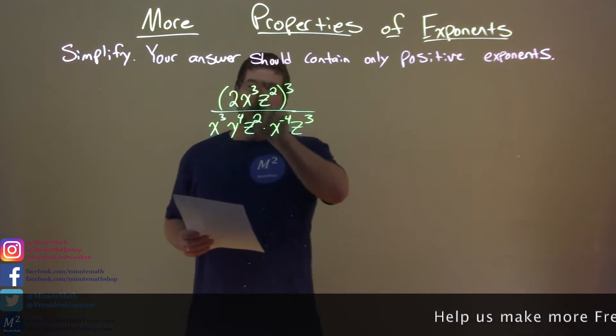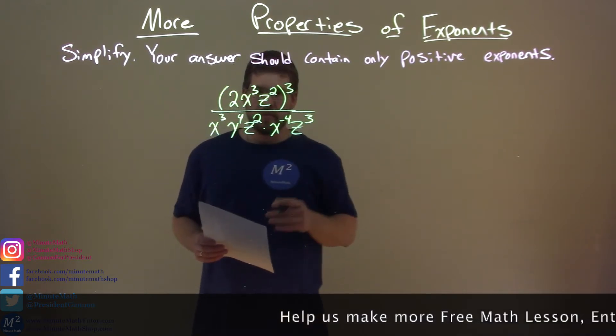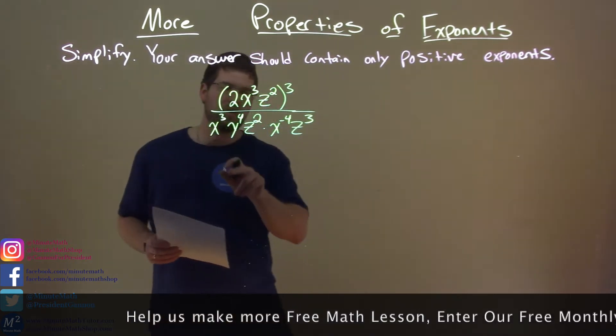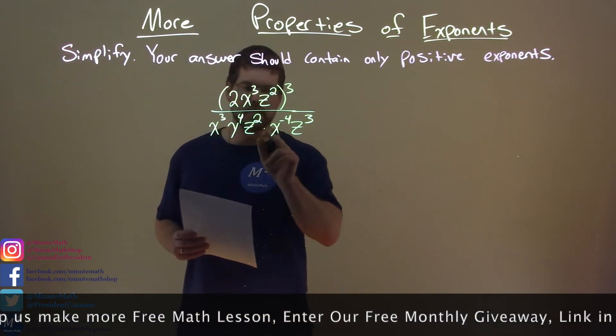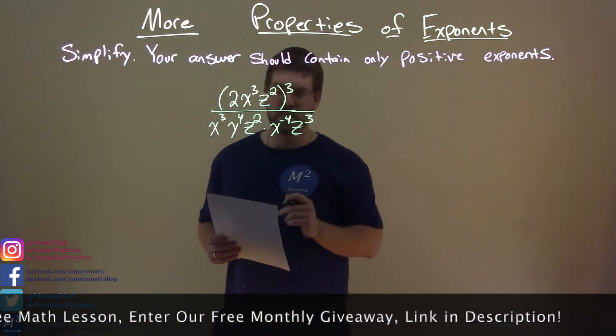2x to the third power z squared all to the third power, divided by x to the third y to the fourth z squared times x to the negative one z to the third power.